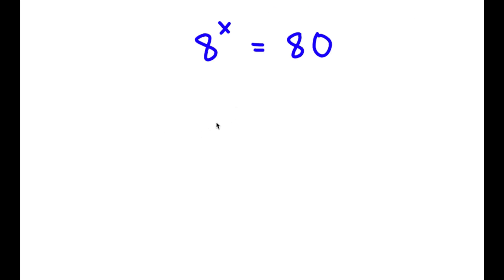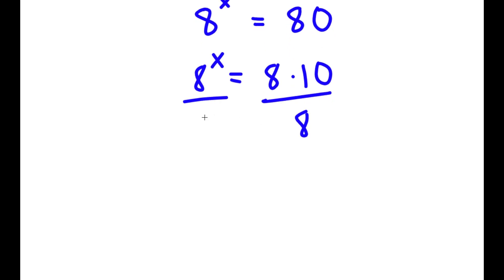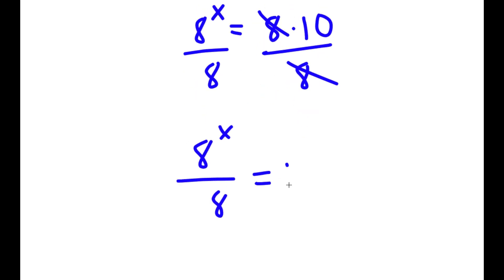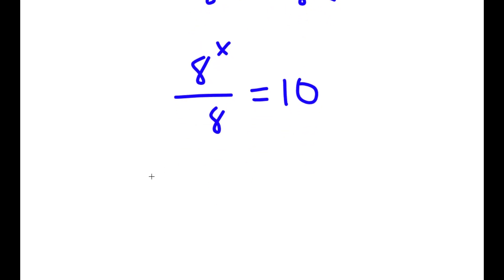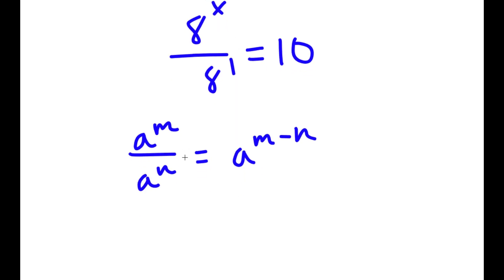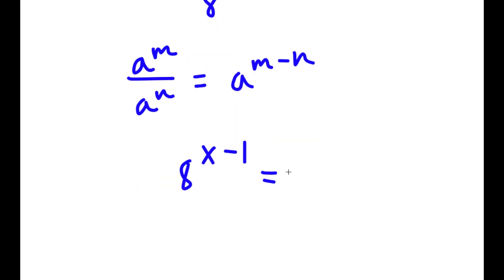In this problem, I have 2 to the power of x is equal to 80. To solve this, I'm going to rewrite 80 as 8 times 10, so now I have 2 to the power of x equals 8 times 10. Then I divide both sides by 8, giving 2 to the power of x over 8 equals 10. Since a^m divided by a^n equals a^(m−n), I get 2 to the power of x over 2 to the power of 1, which equals 2 to the power of x minus 1, equal to 10.